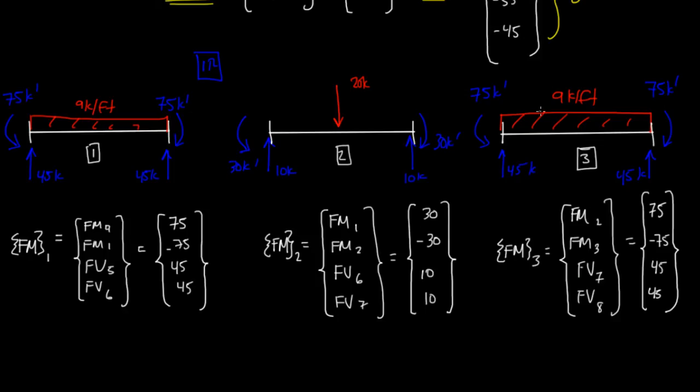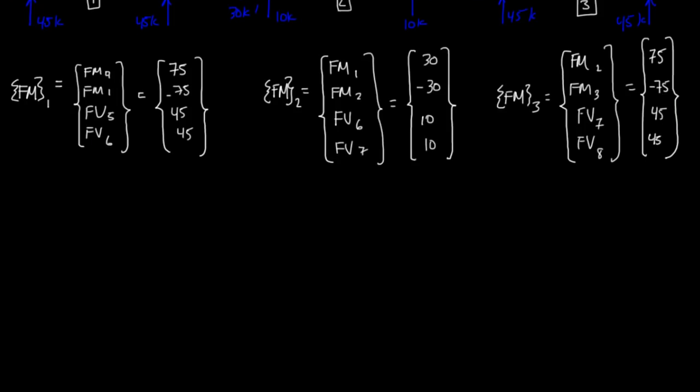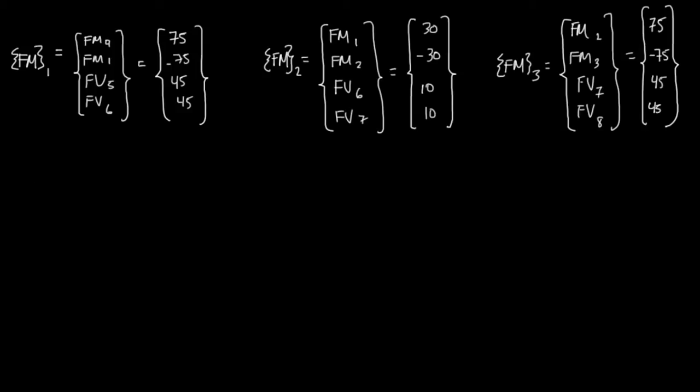All right, welcome back. In this video, we're going to calculate our delta u, or our unrestrained deformations. The equation we use for that is S sub uu inverse times our joint load unrestrained column vector. So first, we need to figure out what S sub uu inverse is.